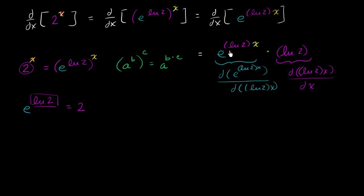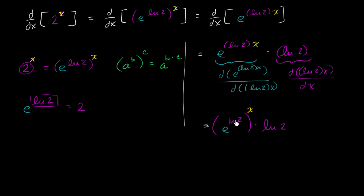We're essentially done, but we can simplify further. The e to the natural log of 2 times x can be rewritten using the exponent property as e to the natural log of 2, raised to the x power, times the natural log of 2. But e to the natural log of 2 is exactly equal to 2. So the derivative of 2 to the x is equal to the natural log of 2 times 2 to the x, or equivalently, 2 to the x times the natural log of 2.